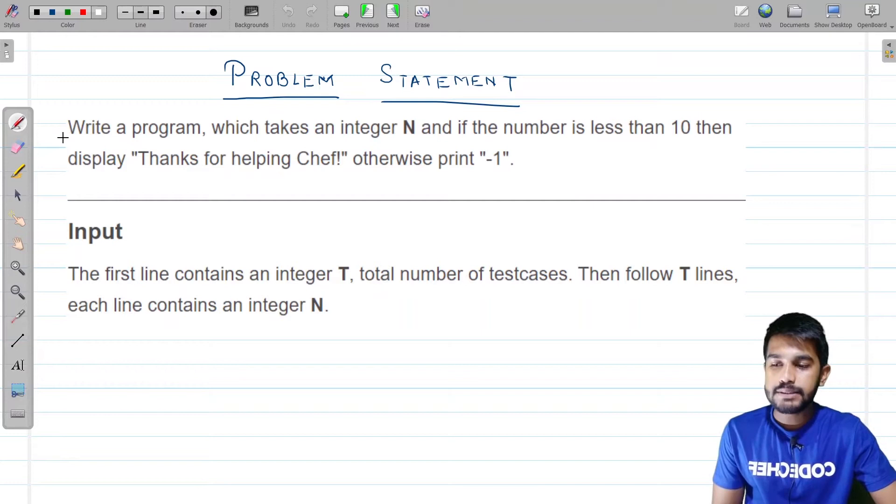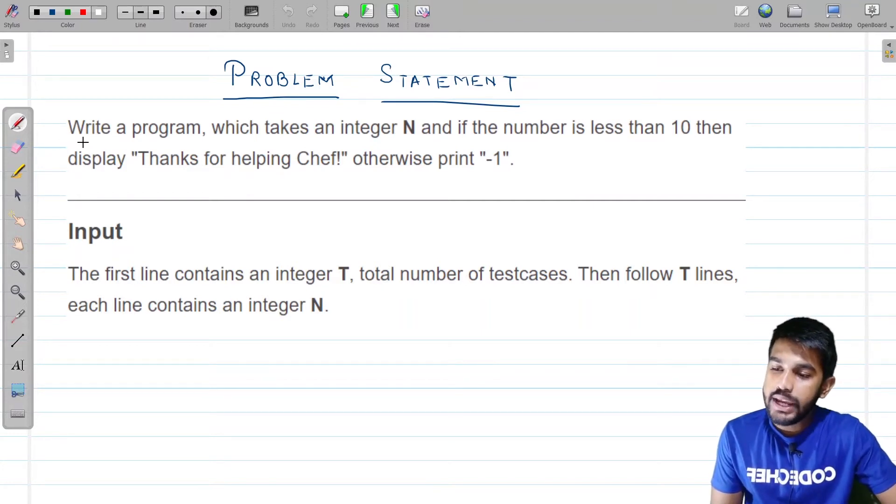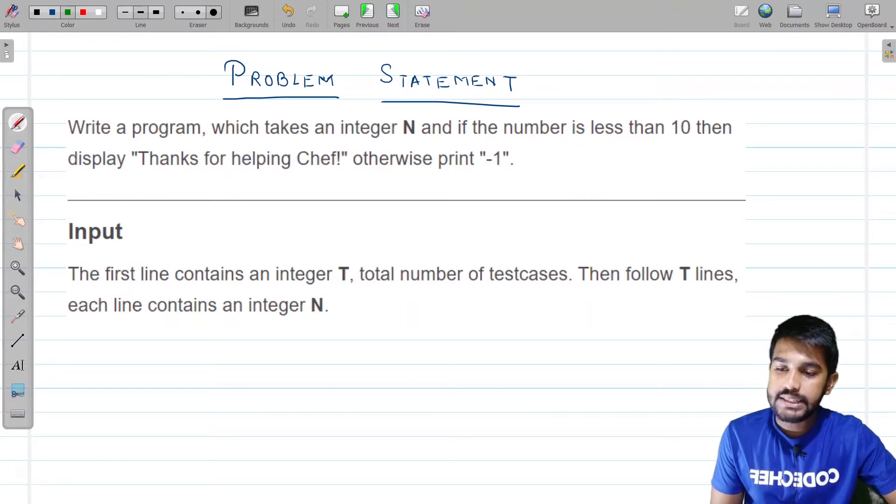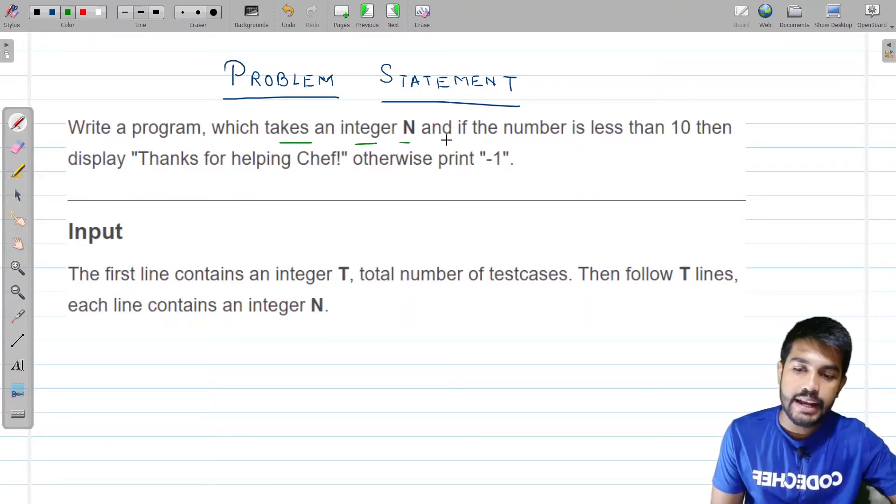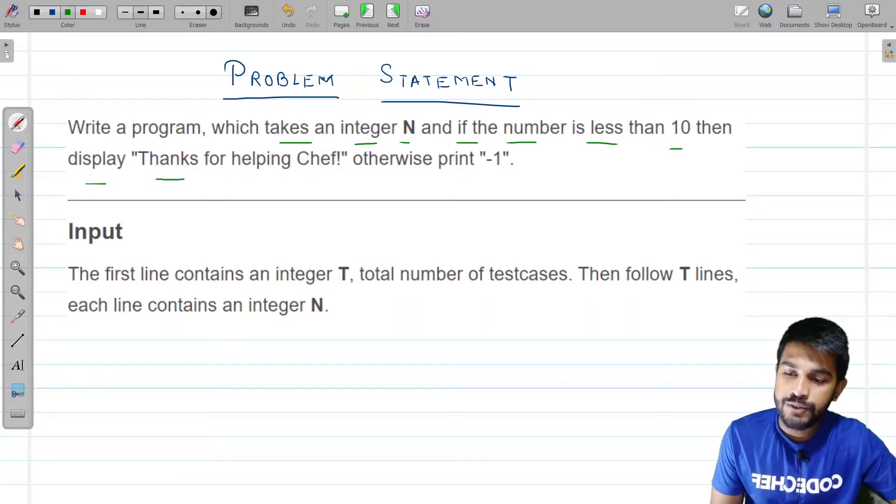Now the problem statement says that we need to write a program which takes an integer n and if the number is less than 10 then display thanks for helping chef, otherwise we need to display minus 1.